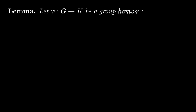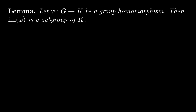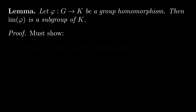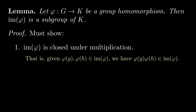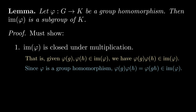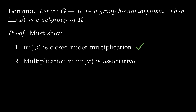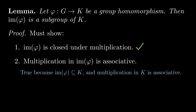The first step to proving this theorem is to prove a general fact about group homomorphisms. Let phi be a group homomorphism from a group g to a group k. Our claim is that the image of phi is a subgroup of k. To prove this, we check the group axioms. First, we must show that Im(phi) is closed under multiplication, meaning the product of any two things in Im(phi) is still in Im(phi). Since phi is a group homomorphism, by definition we have that phi(g) times phi(h) equals phi(gh), which is in the image. Second, multiplication in Im(phi) is associative because Im(phi) lies in k, and multiplication in k is associative since k is a group.